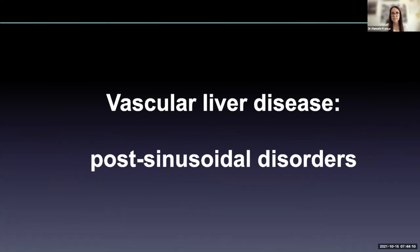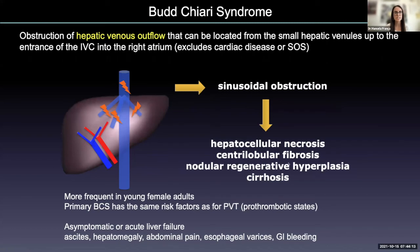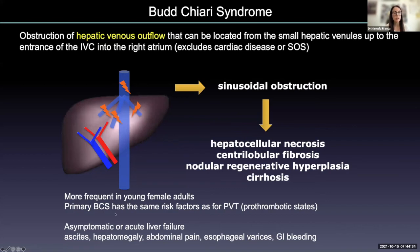Another vascular disease that may resemble liver cirrhosis is Budd-Chiari syndrome. In Budd-Chiari syndrome, we have obstruction of the hepatic venous flow from the hepatic veins to the entrance of the inferior vena cava, excluding cardiac disease. This is more common in young female patients, and the risk factors are the same as for portal vein thrombosis regarding prothrombotic states.